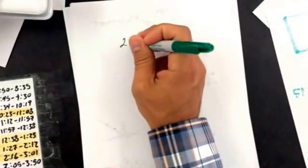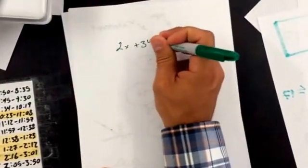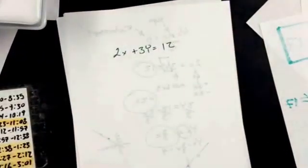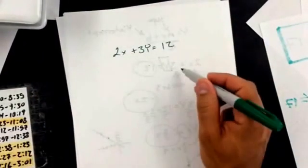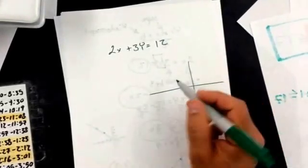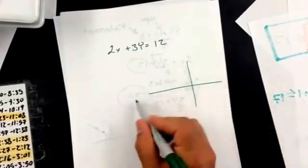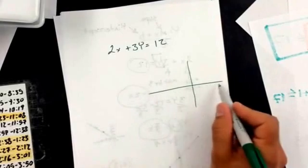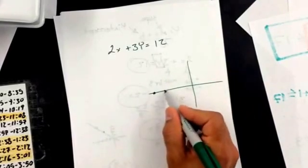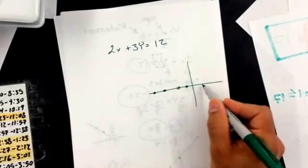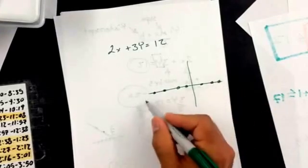Now we won't always want to get it in slope intercept form because sometimes we'll want to actually know the x and y intercepts and not just the y intercepts. So if I have it in standard form and I want to figure out the x intercept, at every x intercept, always, every single time, an x intercept is where it crosses this line. At every single x intercept, the y value is 0. No matter where it crosses this line, y is 0.